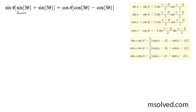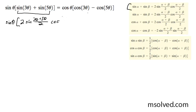First, I'm going to focus on the inside and use the sum-to-product form. We rewrite using the top equation, getting 2 sine of (3θ + 5θ)/2 times cosine of (3θ - 5θ)/2. This gives us sine θ times 2 sine(8θ/2), which is 4θ. The cosine term becomes negative 2θ over 2, but because cosine is an even function, it simply becomes cosine θ.